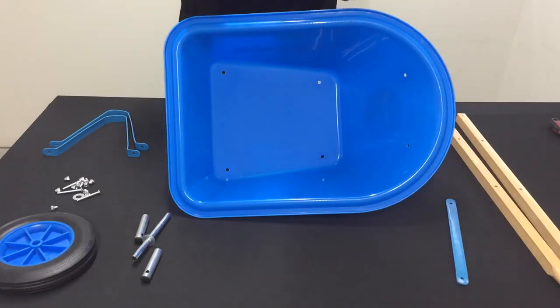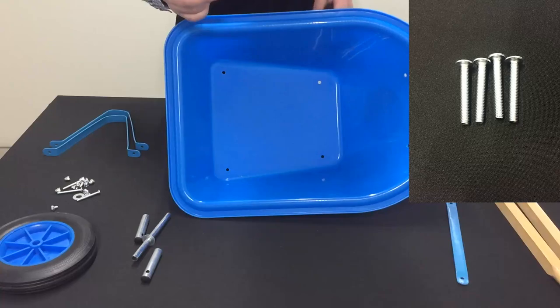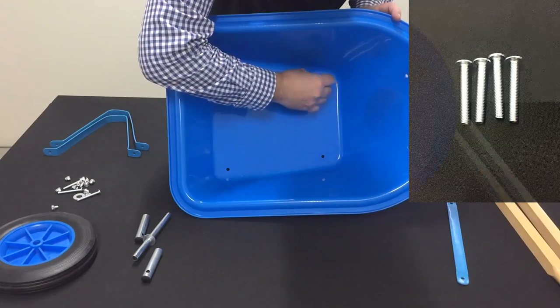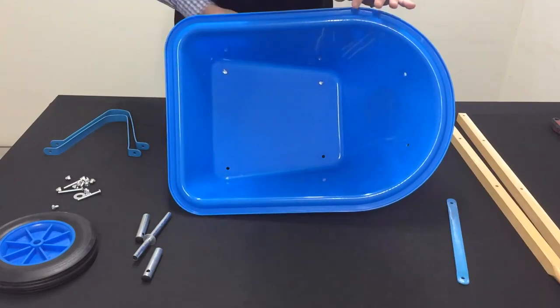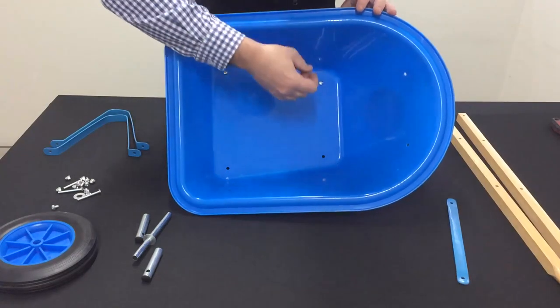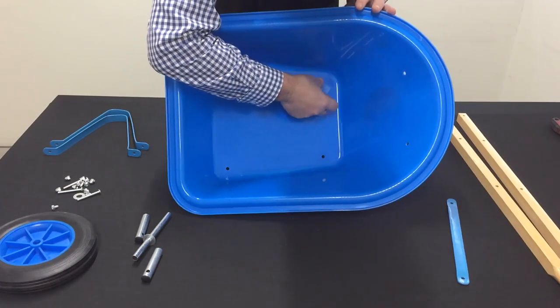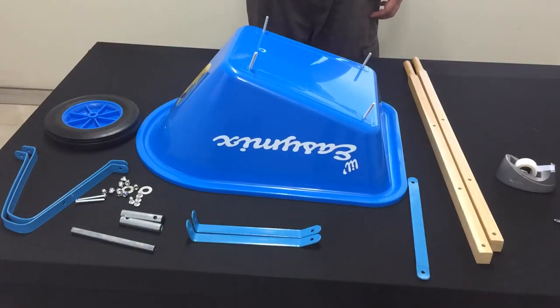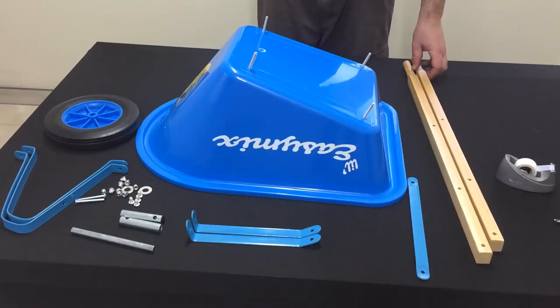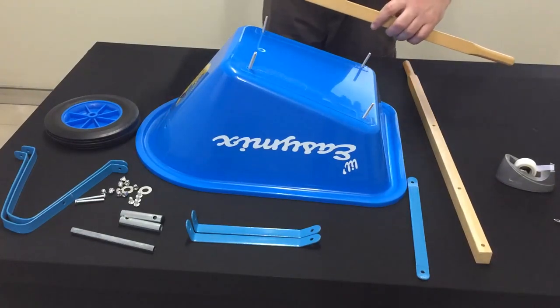First step we are going to take our four medium sized bolts, you can see there, we are going to place them through the tray. Now a good tip is to just use a small piece of tape just to keep the bolts in place. Now that we have our bolts in place that are sticking back through the tray, we can fit on top the wooden handles.